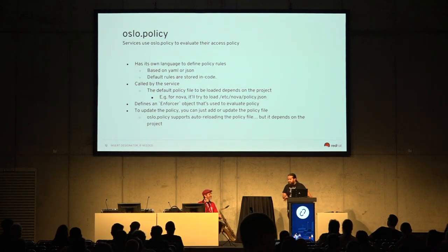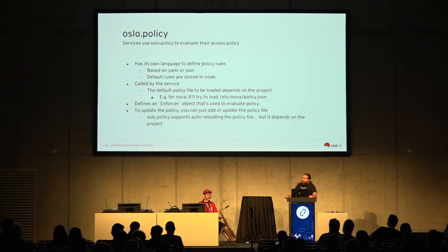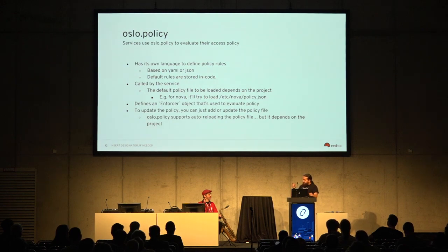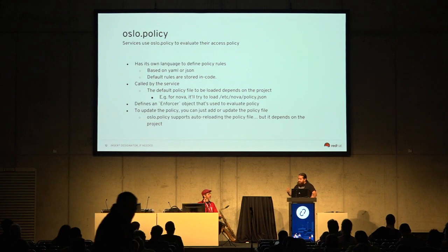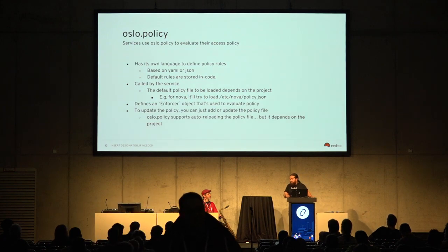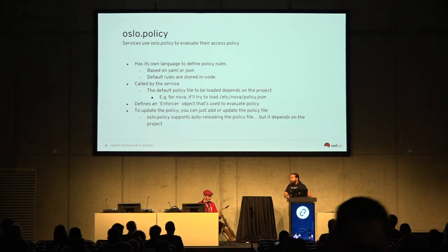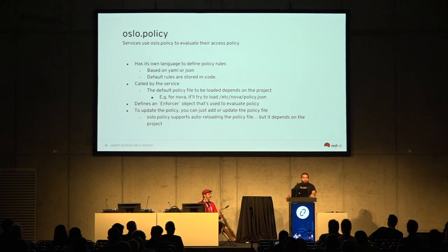Keystone does policy in code. Barbican does it in code. Neutron still doesn't do it in code yet. There's also another gotcha: when you're updating your policy, usually some services just read the policy automatically — they check when it was last modified and automatically refresh it. That's very nice because you only need to change etc/nova/policy.json or etc/barbican/policy.json. However, not all services do this. For Keystone, for example, you need to refresh. So it requires a lot of tribal knowledge about which project does what.